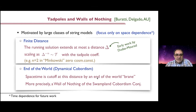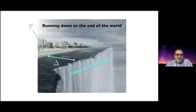This is more or less the picture: you have a tadpole which forces you to run, then you travel a distance, and suddenly you have a cobordism defect — an end-of-the-world wall of nothing that finishes off your spacetime. There are many examples we studied in the already-published paper.